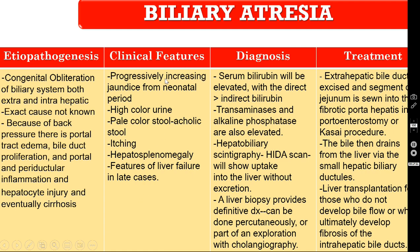The clinical features: all surgical causes create progressively increasing jaundice — that is direct hyperbilirubinemia from the neonatal period onwards. There will be high-colored urine and pale acholic stools. Patients will have itching due to increased biliverdin. On careful palpation of the abdomen there may be hepatosplenomegaly. In advanced cases there will be features of liver failure.